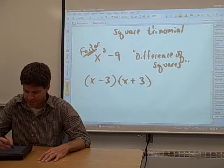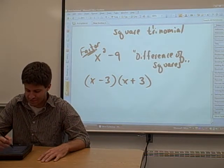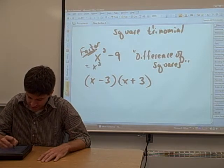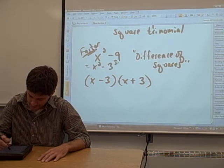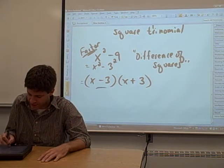In this case, we have an x squared minus a three squared. Whenever you have that case, you can factor it into two binomials just like this.